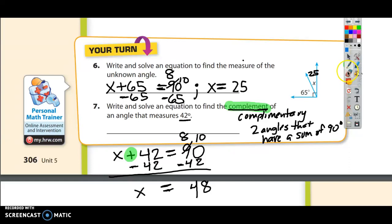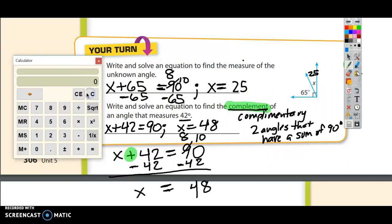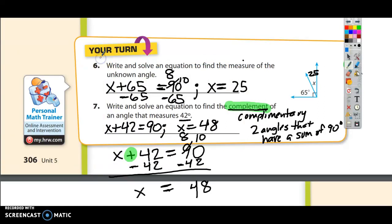So I have to do two things on this line. I had to write and solve the equation. The equation was x plus 42 equals 90, and the answer is that x is equal to 48. I'm going to prove that on a calculator. 48 plus 42 is 90.